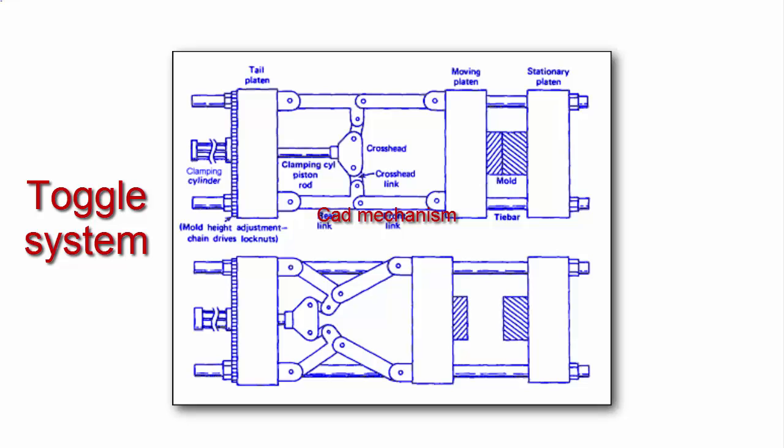Clamping force comes from mechanical power, but the force works only when the toggle arm is fully extended. Therefore, it is necessary to adjust the clamping device according to the mold thickness.